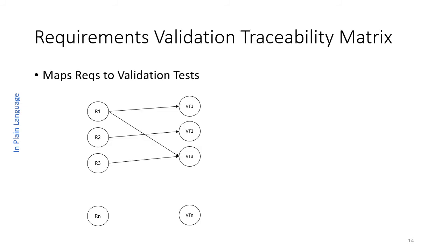As there was in verification testing, there's a Requirements Validation Traceability Matrix, or RVTM. This is a matrix or document that maps the requirements to the validation tests, and you want to demonstrate that every single requirement has at least one validation test. It's not uncommon for a given validation test to test more than one requirement, and it's not uncommon for a single requirement to be tested more than once by different validation tests.